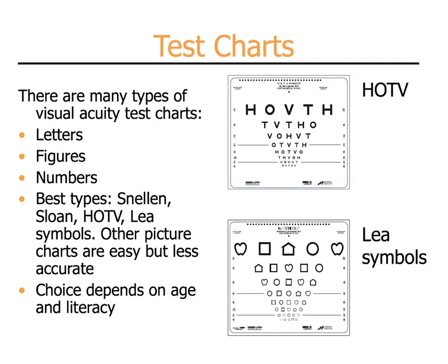There are many types of visual acuity test charts; however, some are better than others. The best ones are well-constructed letter charts such as the Snellen, the Sloan, the HOTV — seen on the top right here — and Lea symbols, seen on the bottom right here. These charts are preferable because they are evenly constructed with uniform spacing and uniform numbers of optotypes on each line. Frequently, if a child is unable to verbally identify the letter or symbol, it may be easiest for them to use a matching card and point. Which test you use will depend on not only the patient's age, but also their literacy level.